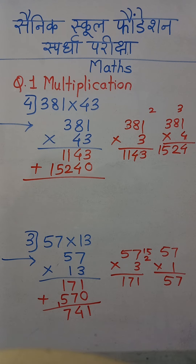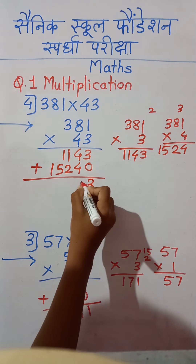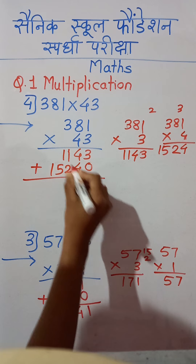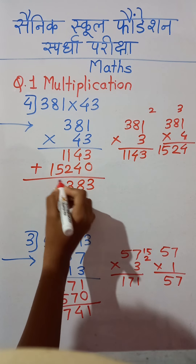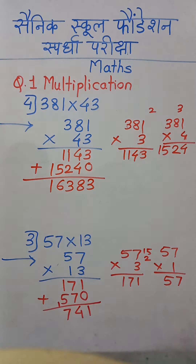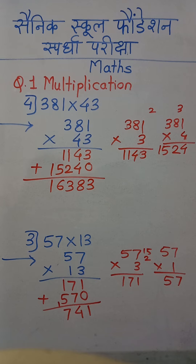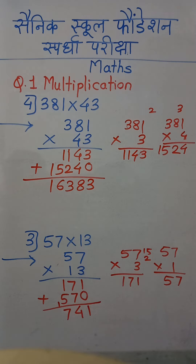Now we add both answers. Starting from the right: 3 plus 0 is 3; 4 plus 4 is 8; 1 plus 2 is 3; 1 plus 5 is 6; 1 remains as is. Our final answer is 16,383.